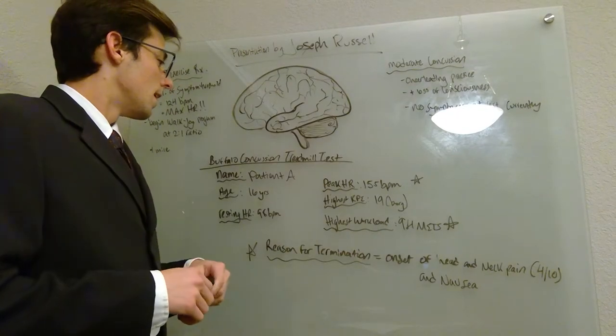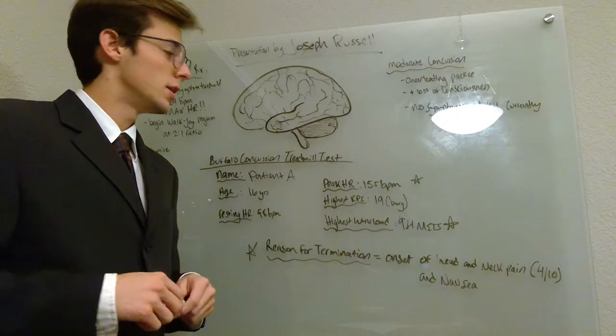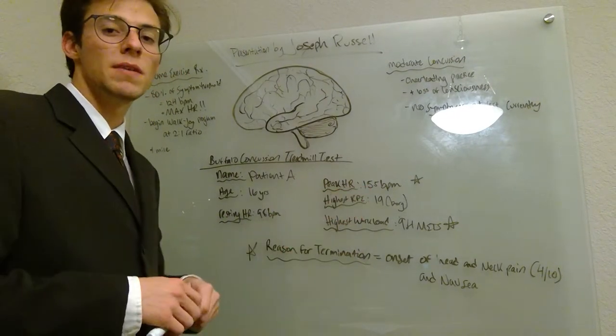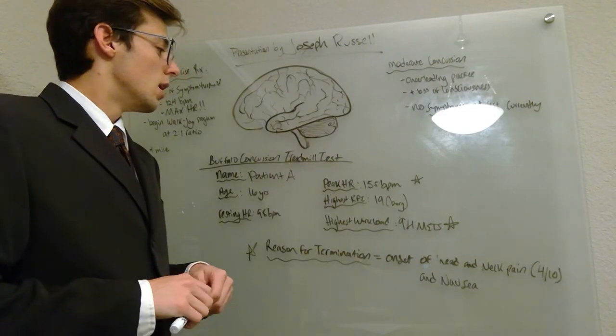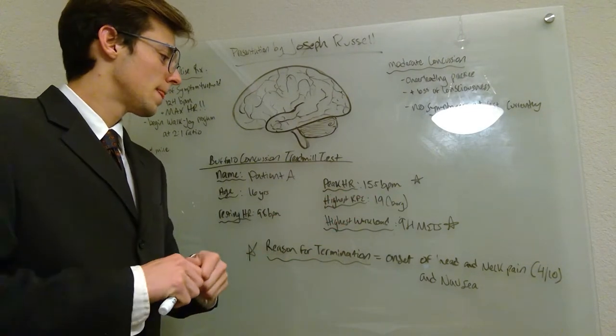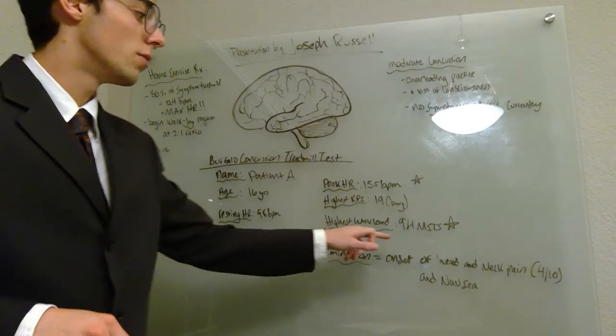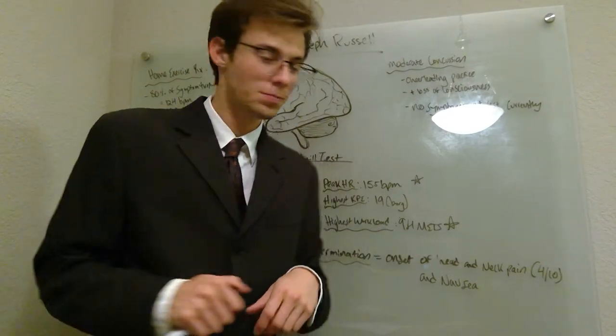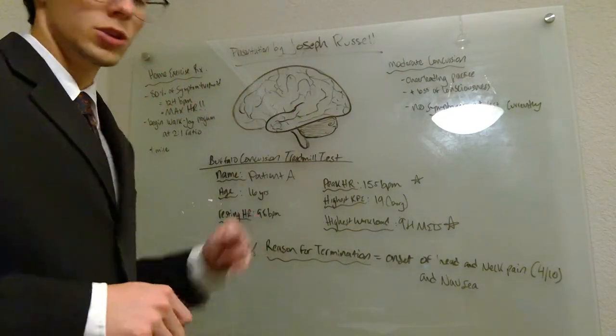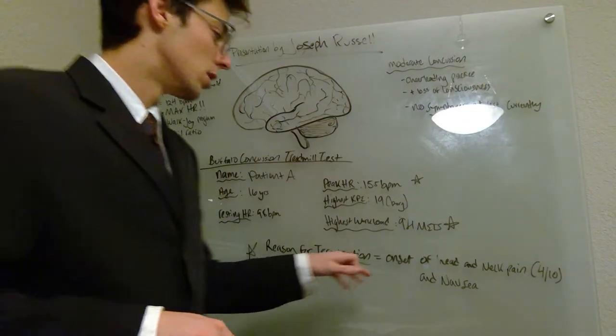At the peak of the test, we got up to 155 beats per minute at an RPE of 19 and a grand total workload of 9.4 METs. The test was terminated because she had a sudden onset of head and neck pain, generalized nausea, rated at a 4 out of 10.